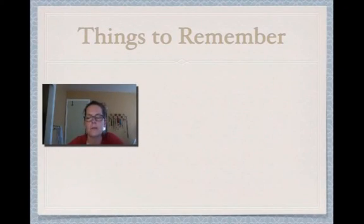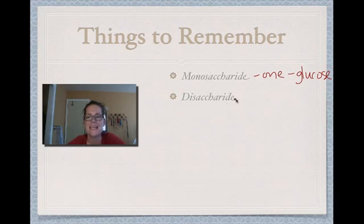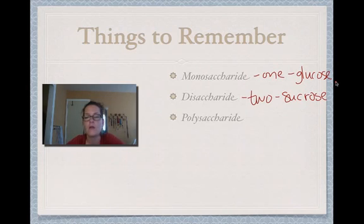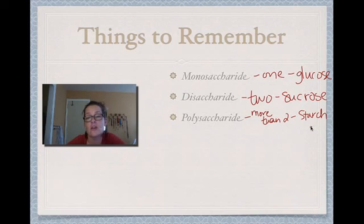Important things to remember: First, one unit of sugar is called a monosaccharide — that's one sugar, and an example is glucose. Second, a disaccharide means two sugars — an example is sucrose, which is table sugar or the sugar found in apples. Third, a polysaccharide means more than two. Examples include starch for plants, glycogen for animals, and cellulose for structure.